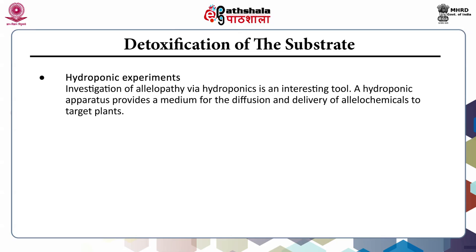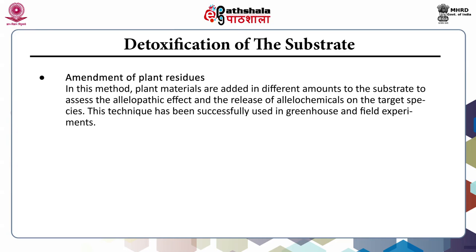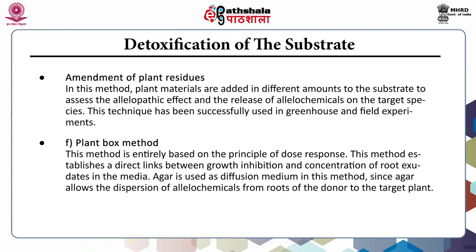Coming to hydroponic experiments: investigation of allelopathy by hydroponics is an interesting tool. A hydroponic apparatus provides a medium for the diffusion and delivery of allelochemicals to target plants. In the amendment of plant residues method, plant materials are added in different amounts to the substrate to assess the allelopathic effect and release of allelochemicals on the target species. This technique has been successfully used in greenhouse and field experiments. The plant box method is entirely based on the principle of dose response and establishes a direct link between growth inhibition and concentration of root exudates in the media. Agar is used as diffusion medium, allowing dispersion of allelochemicals from roots of the donor to the target plant.